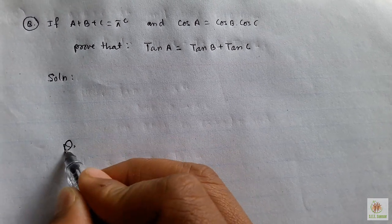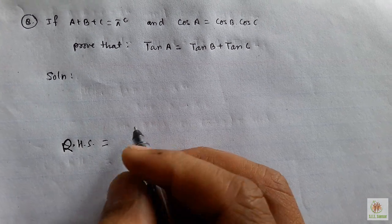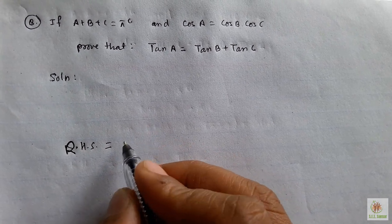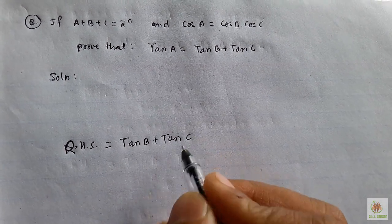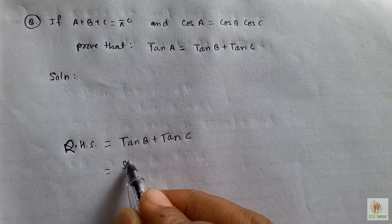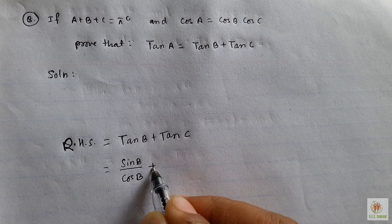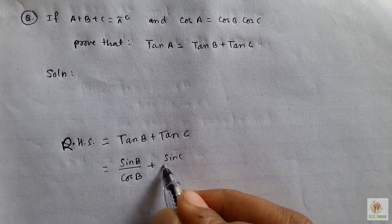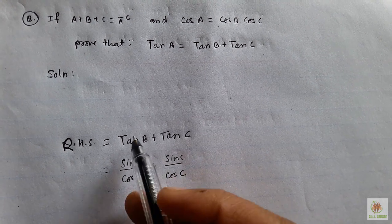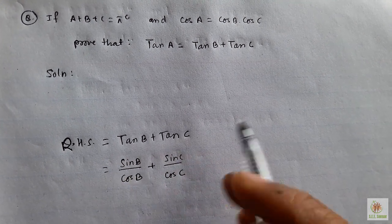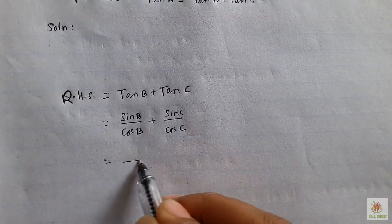In RHS, tan B plus tan C equals sin B over cos B plus sin C over cos C. The formula of tan is sin by cos, so take LCM.